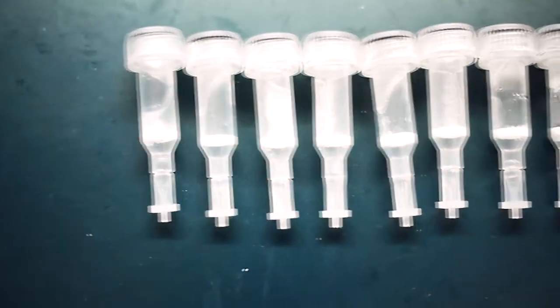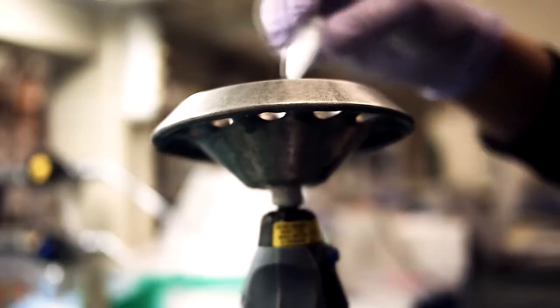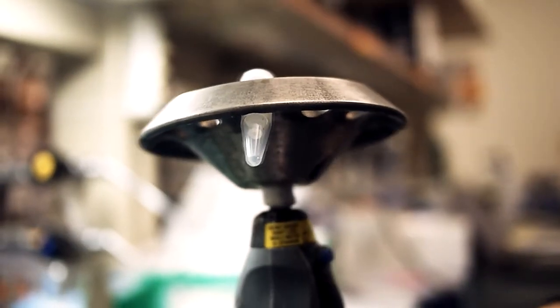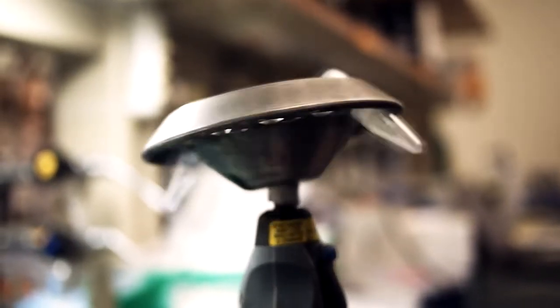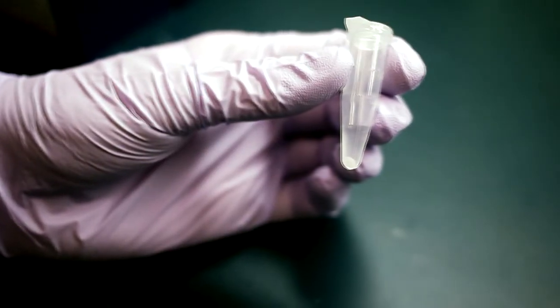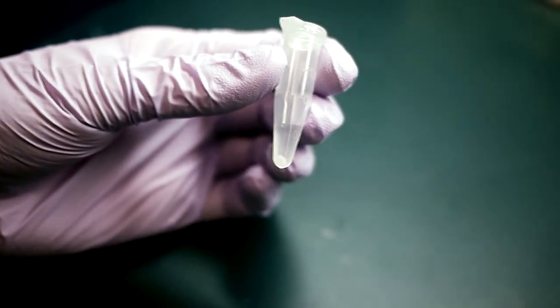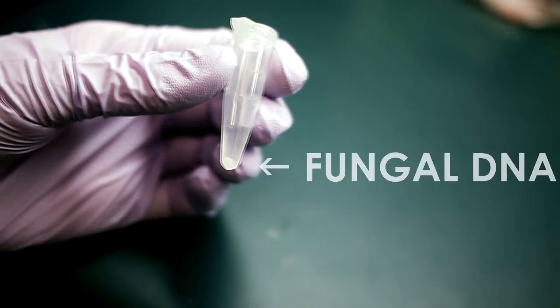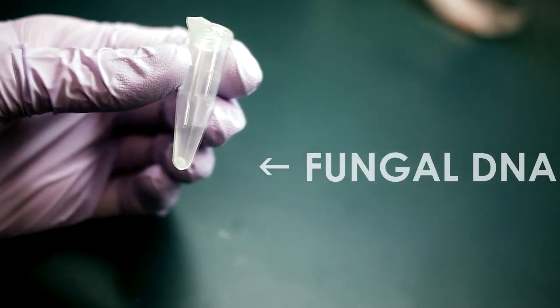This solution is then placed inside the spin filter tube. When centrifuged, this tube can separate the DNA from all the proteins and other junk in the fungus mixture. Now we can see the presence of a small white pellet in the bottom of the tube. See that? That's fungal DNA, indicating a fungal infection.